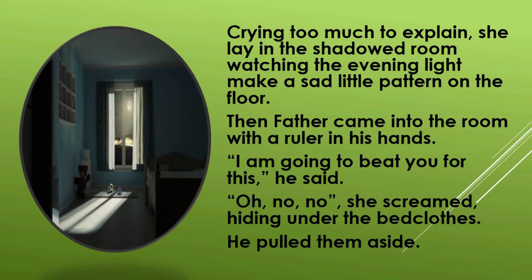She lay in such a dark room and everything seemed very gloomy, the atmosphere appeared very sad. Then father came into the room with a ruler in his hands. Suddenly Kizia's father came into her room carrying a ruler and said to the girl, 'I am going to beat you for this.' He wanted to punish her for having destroyed some of his important documents.